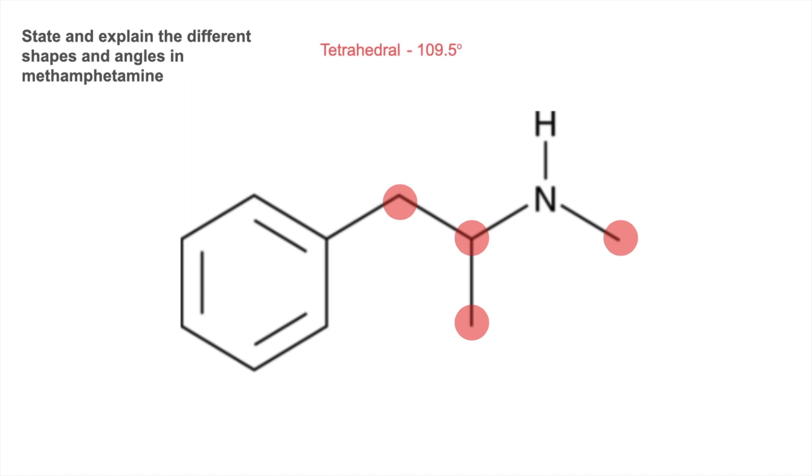We've got tetrahedral shape, 109.5 degrees. The reason for that, we've got four electron regions around the central atom. They're all bonding regions and therefore you've got equal repulsion.